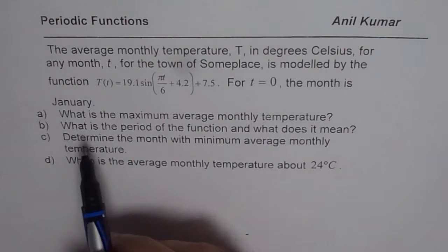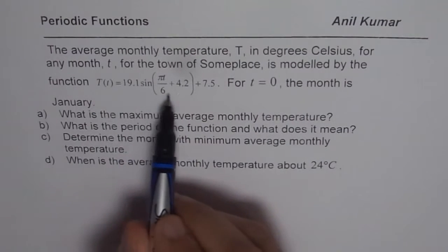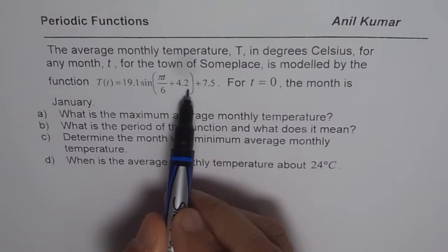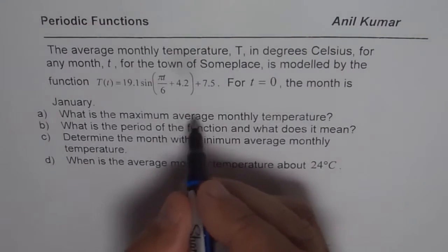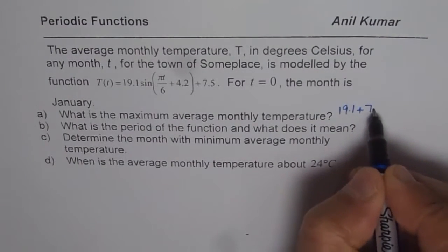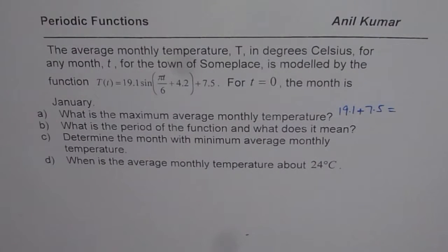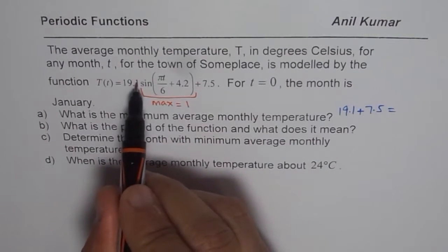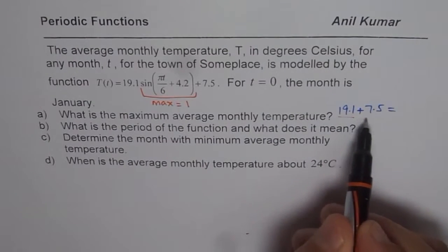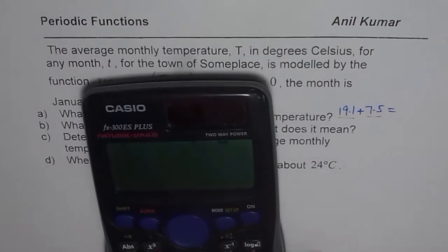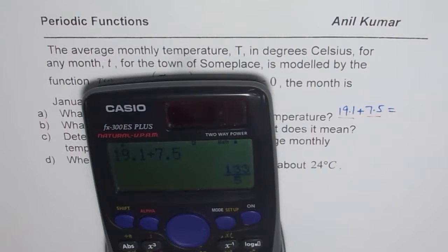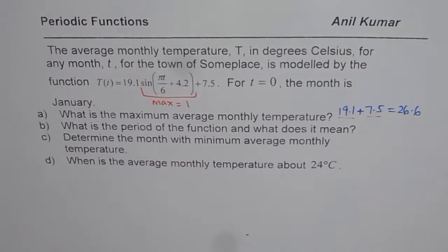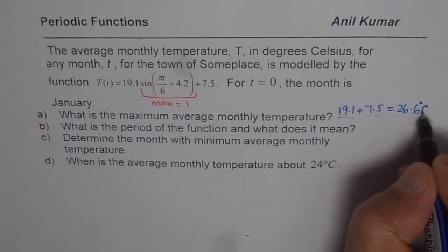Let's begin with the first one: what is the maximum average monthly temperature? For a sinusoidal function, the maximum equals the axis plus the amplitude, because sine of anything has a maximum value of 1. So the maximum equals 19.1 plus 7.5. You do not have to do any other calculations. We substitute sine = 1, giving 19.1 × 1 + 7.5. Using a calculator, 19.1 + 7.5 = 26.6. So 26.6 degrees Celsius is your maximum average monthly temperature — and degrees Celsius is important to write.